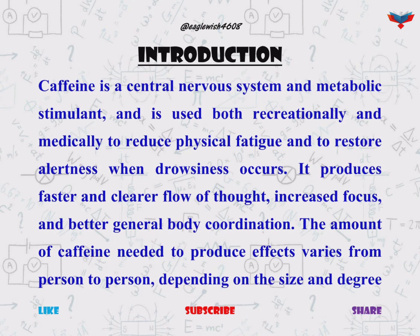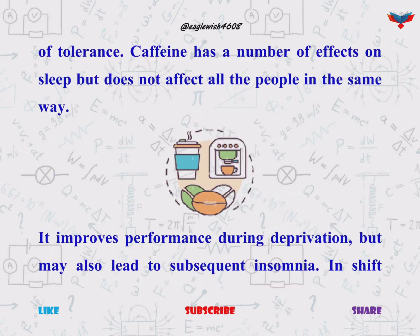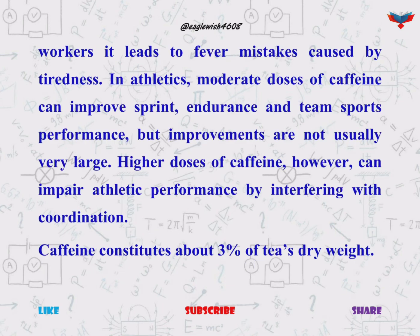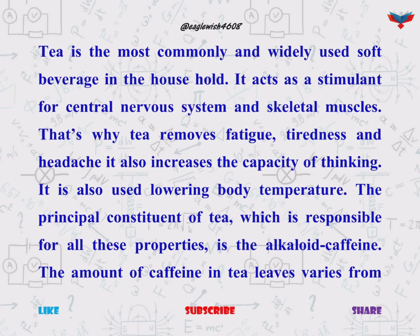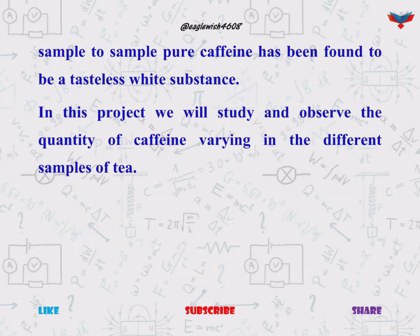Firstly we will write a brief introduction about caffeine. Caffeine is a drug that stimulates and increases the activity of your brain and nervous system. Caffeine is found in many drinks such as coffee, tea, soft drinks and energy drinks. In this project we will study and observe the quantity of caffeine varying in different samples of tea.